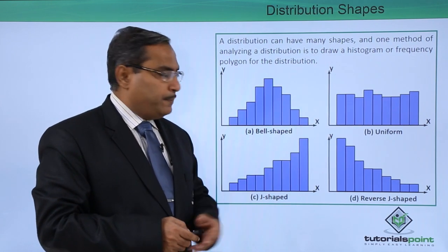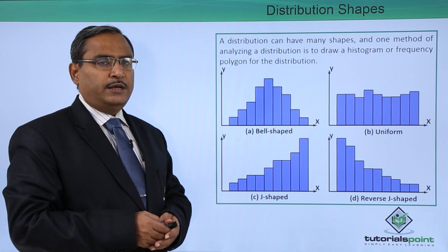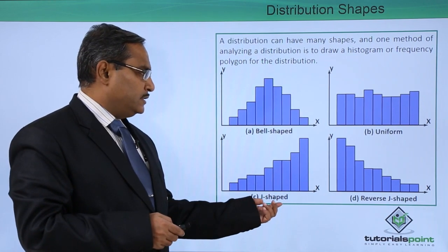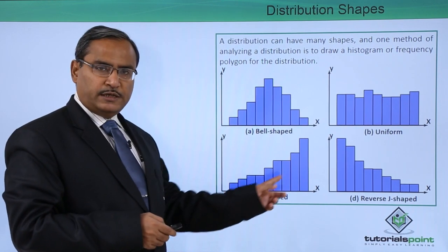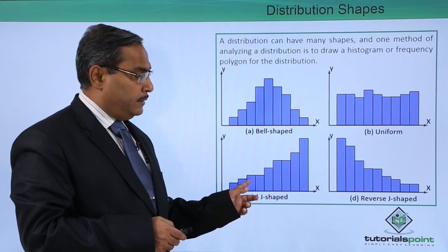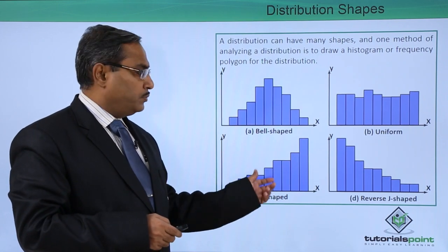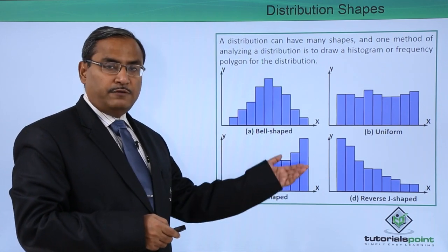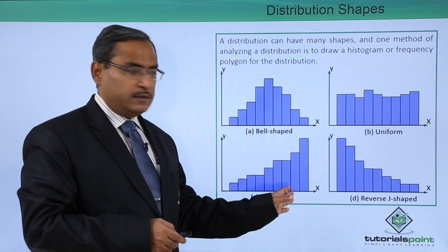Otherwise, for this type of distribution shape, we can call it a uniform shape. This is known as the J-shaped if the distribution is something like this, because most of the data is falling in the higher value for x in the higher class intervals.